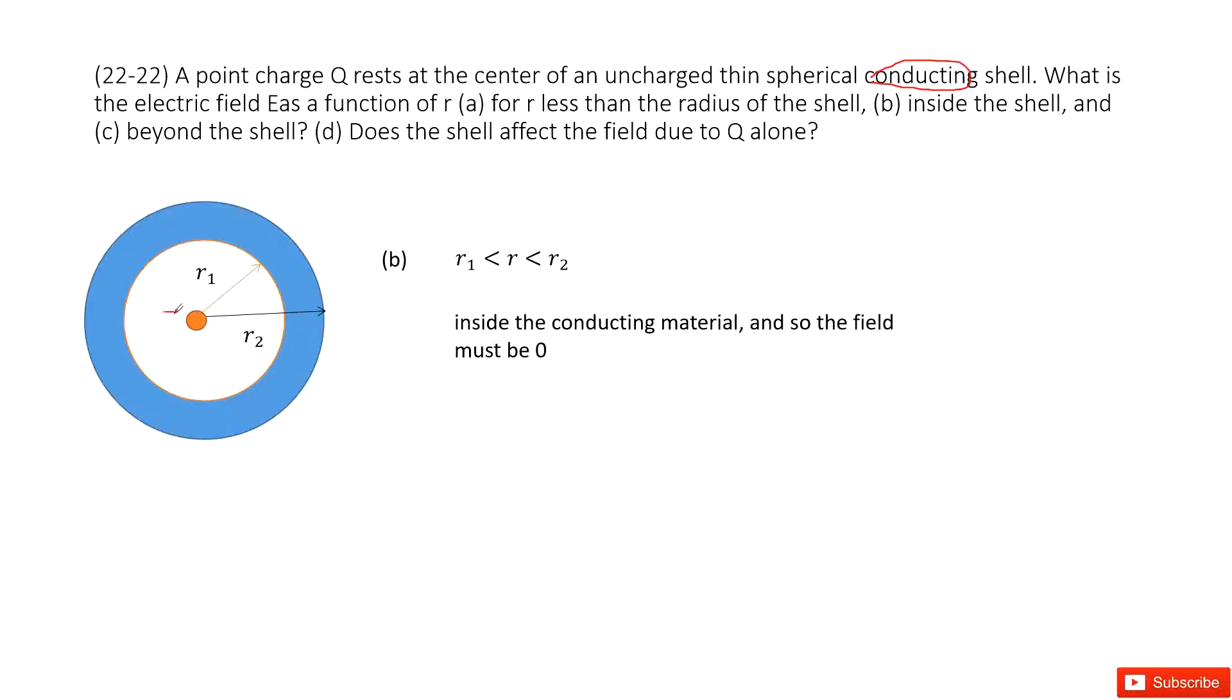And we can prove it. You can see this is a positive Q. And then this one is a conducting object. So the inner surface has induced charge negative Q. The outer surface has induced charge positive Q. If we draw a Gaussian surface inside this conducting object, the enclosed charge is 0.